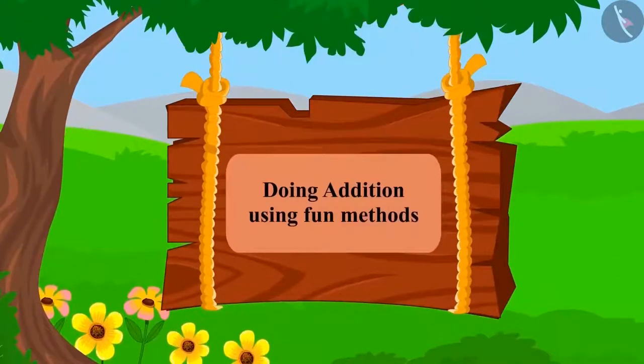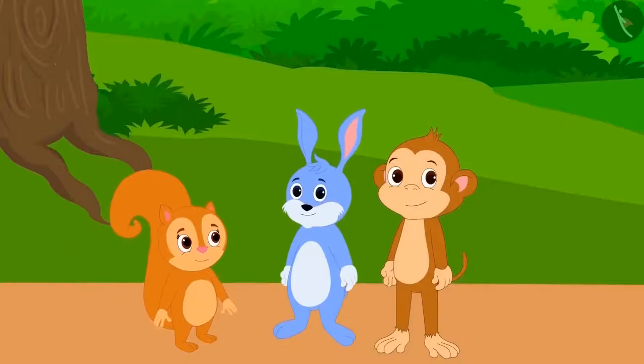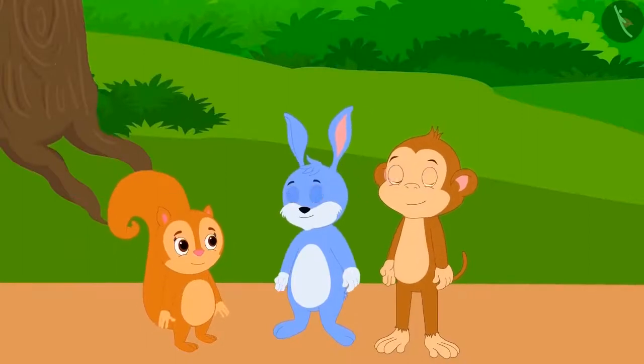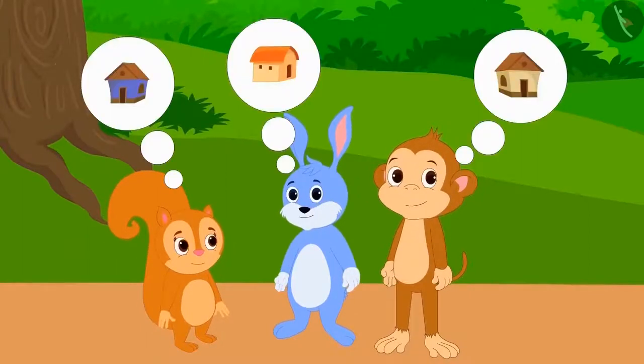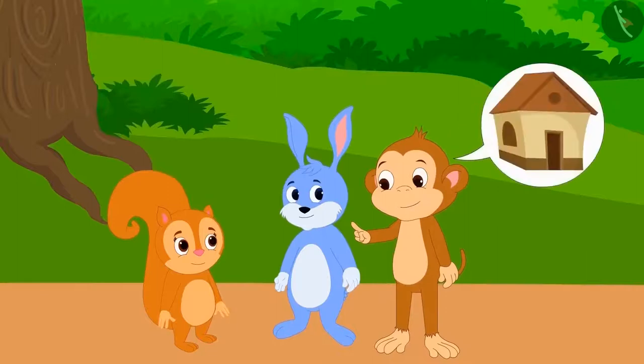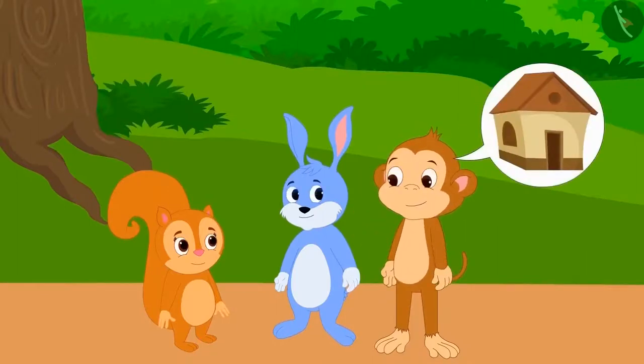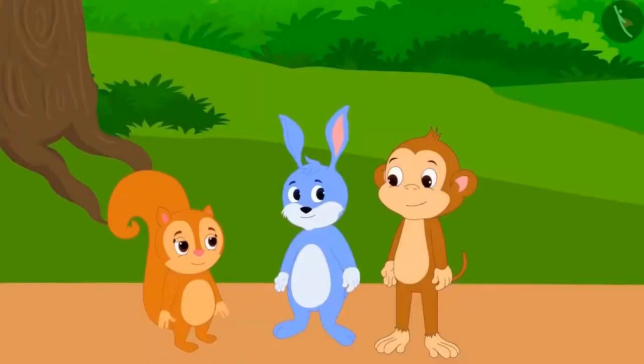Children, today we will learn to write any number in different ways using addition. Chanda Squirrel, Bunny Rabbit and Babbin Monkey decided to build a house in the forest. Babbin told Chanda and Bunny that they should build a house together so that their house is the strongest. But Chanda and Bunny refused and said that they will build their own separate houses.